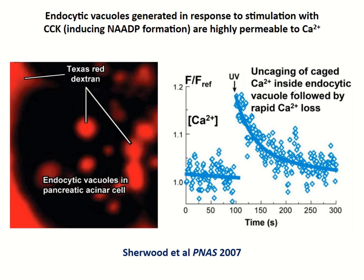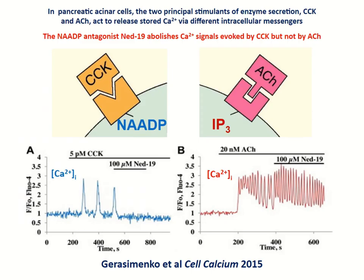Uncaging the calcium causes a dramatic rise in calcium concentration inside the endocytic structure, followed by a fairly rapid calcium loss. This is a situation where the cells are stimulated by CCK, which actually induces formation of NAADP. The pancreatic acinar cells are interesting in this context because we have two separate calcium signaling systems: the calcium signaling induced by CCK, where the primary intracellular messenger is NAADP, and another system stimulated by acetylcholine.